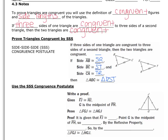Here it is in proof format using the SSS congruence postulate. Given that FJ is congruent to HJ — which is marked — and that G is the midpoint of FH, it's your responsibility to mark those pieces congruent. Since G is the midpoint, FG is congruent to HG by the definition of a midpoint, which cuts the segment into two congruent segments.